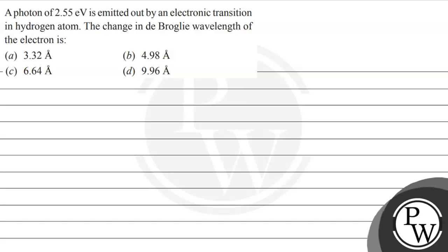Hello, let's read this question. A photon of 2.55 electron volt is emitted out by an electronic transition in hydrogen atom. The change in De Broglie wavelength of the electron is — and these are the following options given to us.